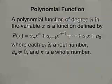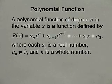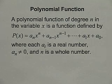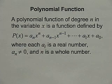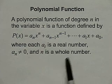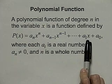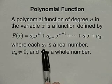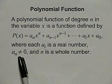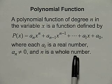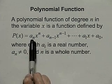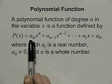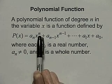Let's start with the definition of a polynomial function. The polynomial function of degree n in the variable x is a function defined by p of x equals a sub n times x to the n, plus a sub n minus 1 times x to the n minus 1, and the pattern continues until we get to a sub 1 x plus a sub 0. Each a sub i is a real number, a sub n specifically is not 0, and n is a whole number. We call a sub n the leading coefficient, and the degree of the polynomial is n.